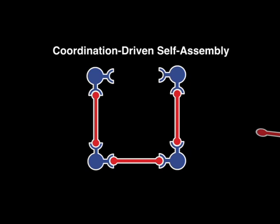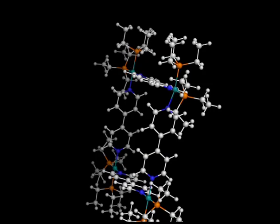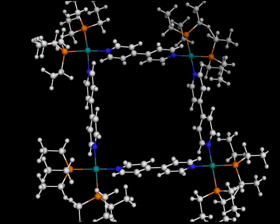Nature uses self-assembly because it's a very efficient way of building the molecules that are essential for living organisms. I make small molecules so that the pieces recognize each other and come together the right way to make much more complex molecules.